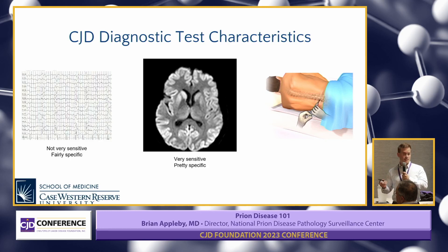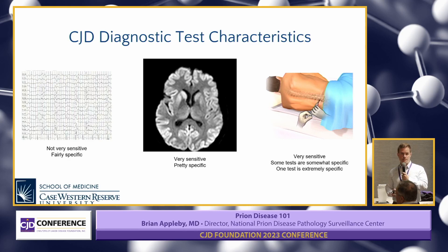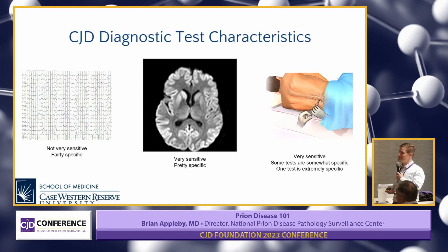The brain MRI — most cases will be positive, not all but many, and it's pretty specific. There's not a whole lot of other things that look like that, although there are some that need to be ruled out. Then we have a couple of different spinal fluid tests. Some are very sensitive — too sensitive, meaning almost all of them are positive. That's the beloved 14-3-3. And then there's RT-QuIC, which is extremely specific, meaning that if it's positive, you're very likely to have the disease.